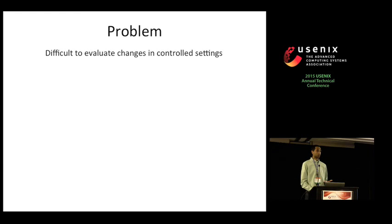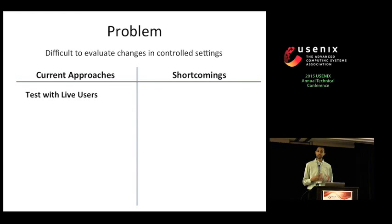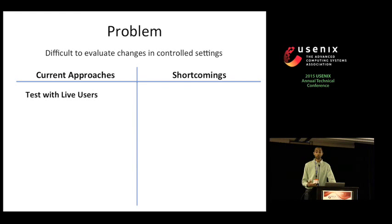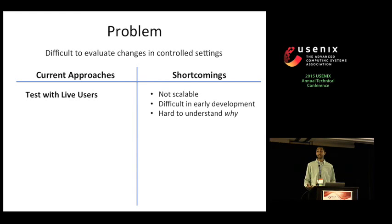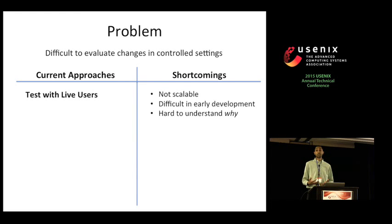Developers today primarily use one of two approaches. The first is to directly test on live users. While it's useful to evaluate a change in the environment in which it'll be deployed, this approach has several shortcomings. There have been too many changes proposed to test all of them on live users, and many developers don't have access to live users. Additionally, in early stages of development, an application or protocol may not perform well enough to be tested on live users.